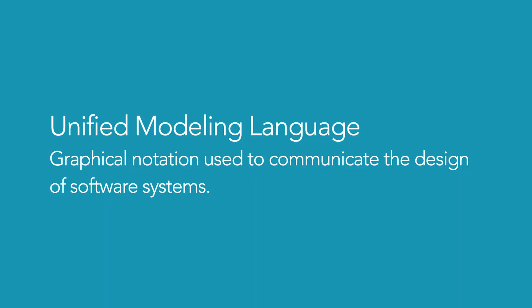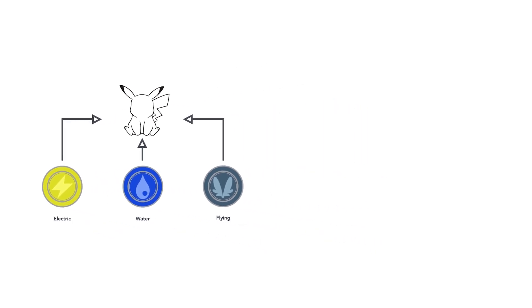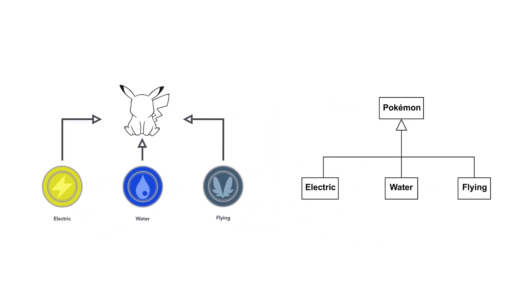UML is not a textual programming language, but rather a graphical notation consisting of diagrams that let us model software systems. We can use these diagrams to describe the objects that form a system and their interactions. UML has many diagram types, and we'll be discussing the most common ones.